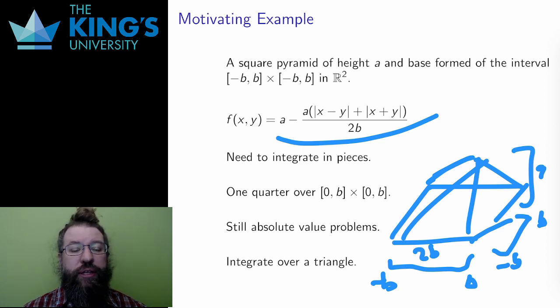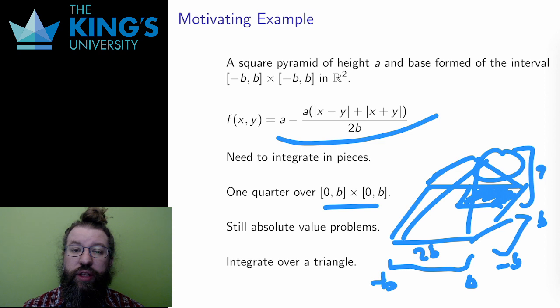So I need to integrate in pieces. I could restrict to one quarter of the pyramid over the interval 0 to b times 0 to b, but there is still a problem. The pyramid still has a sharp corner here, expressed by the absolute value of the function. To really understand this, I need to integrate over a triangle.